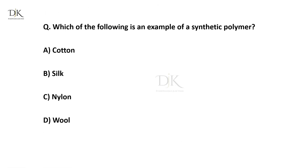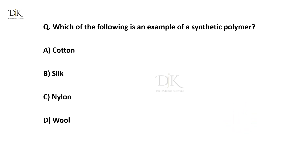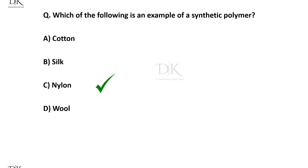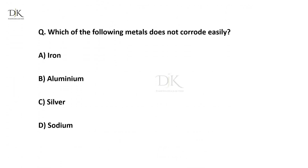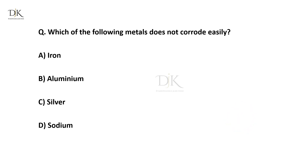Which of the following is an example of a synthetic polymer? The right answer is nylon. Which of the following metals does not corrode easily? The right answer is silver.